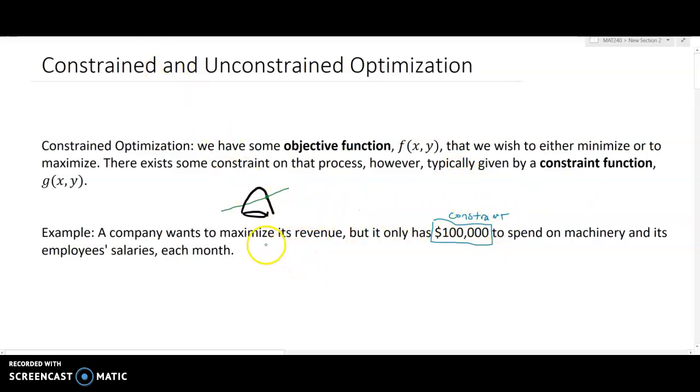In terms of what we want to do, the objective is to maximize its revenue. So the revenue function which we'll call f(x,y) will be our objective function, and the constraint - well here we don't have enough information to write it - but we'll have some sort of constraint function that says you can only spend $100,000.